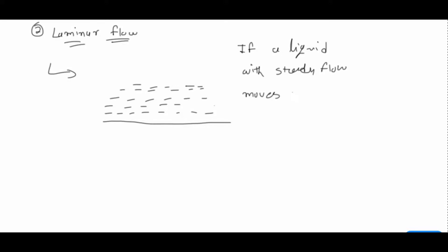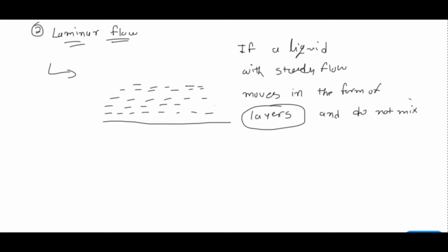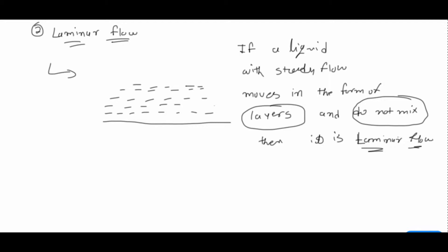It doesn't matter if the velocities are different across layers — what matters is that there are distinct layers of velocity which do not mix with each other. In laminar flow, the particles and velocity layers do not mix. It is a steady flow that progresses layer by layer, and they will never mix with each other.